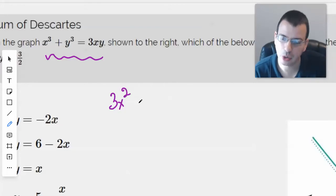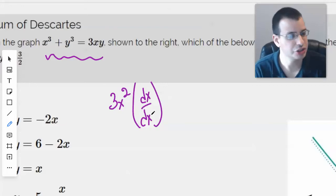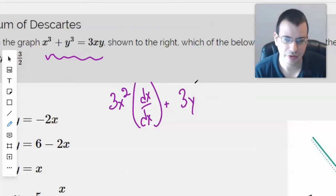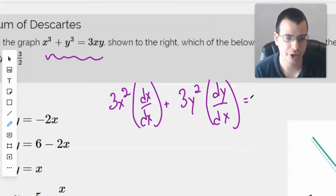So I'll do 3x squared, then I'm going to write dx over dx because it's kind of like the chain rule. We're doing the derivative, multiplying by the derivative of the interior. And then when we get to y, we have dy dx, which is our slope, which is what we want.